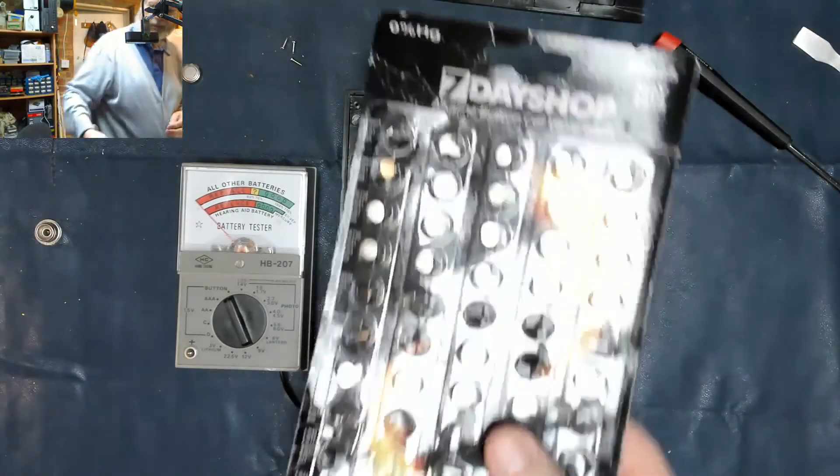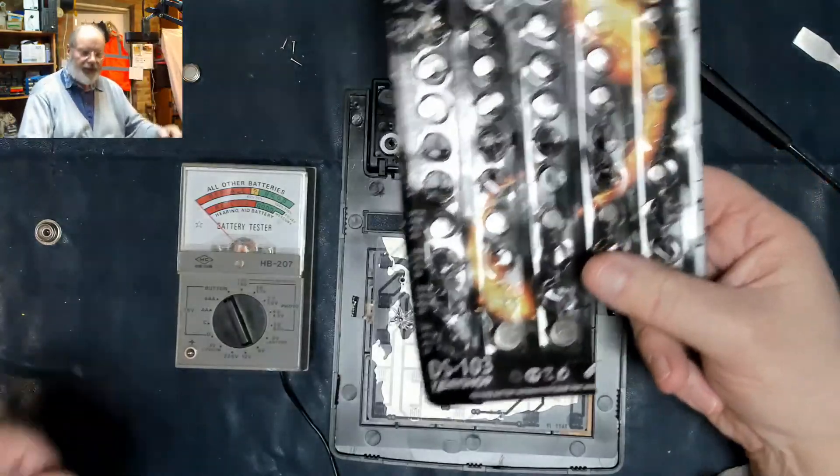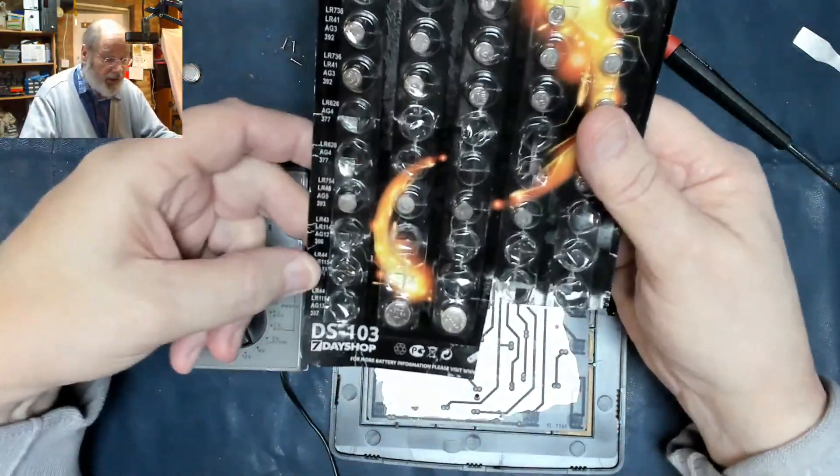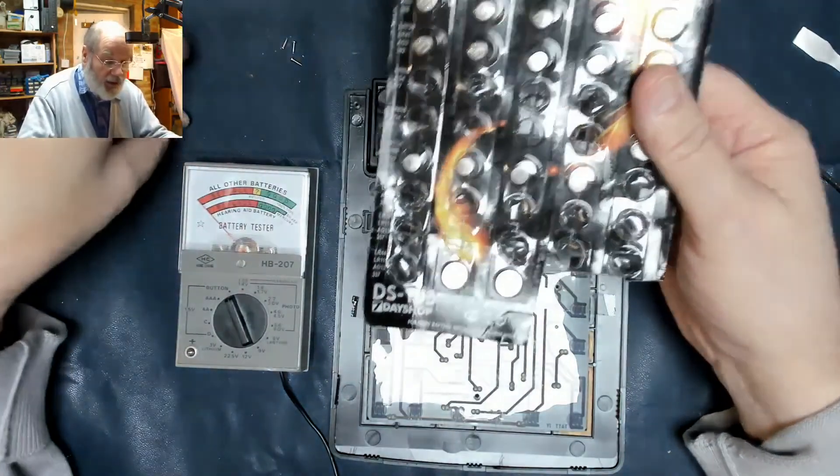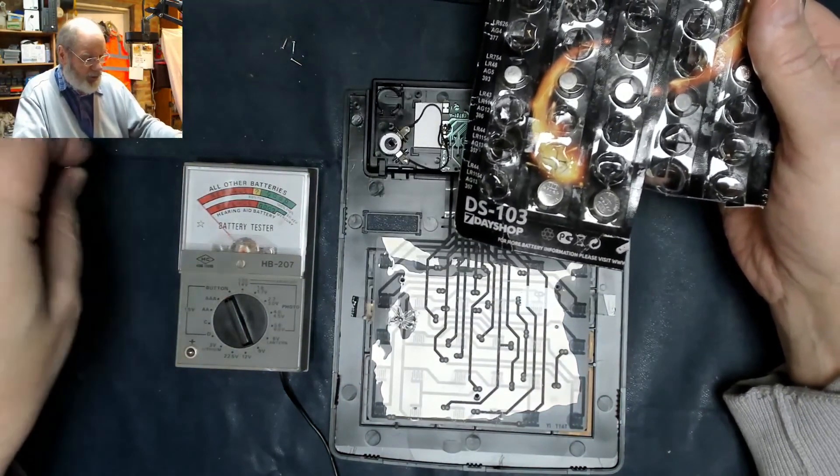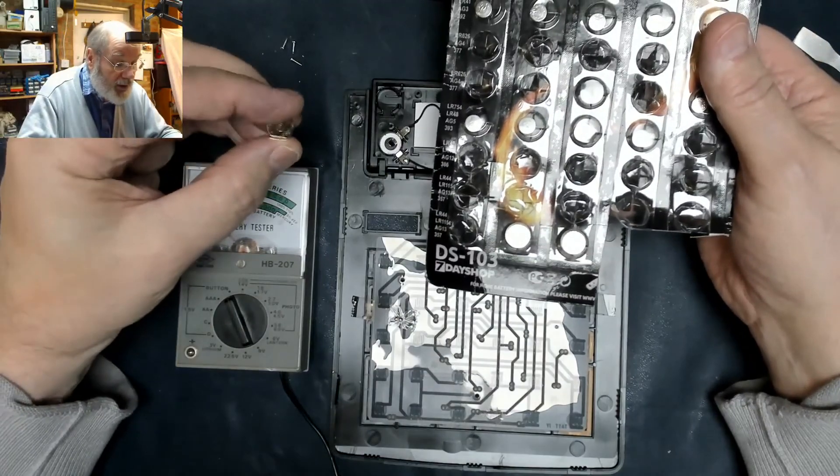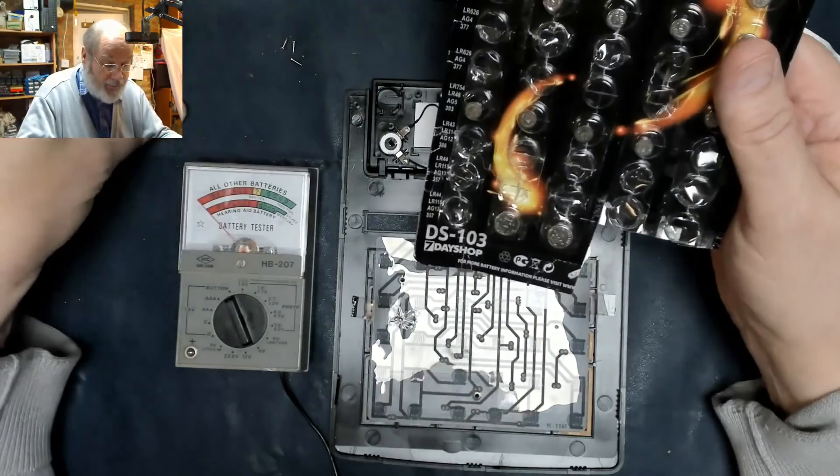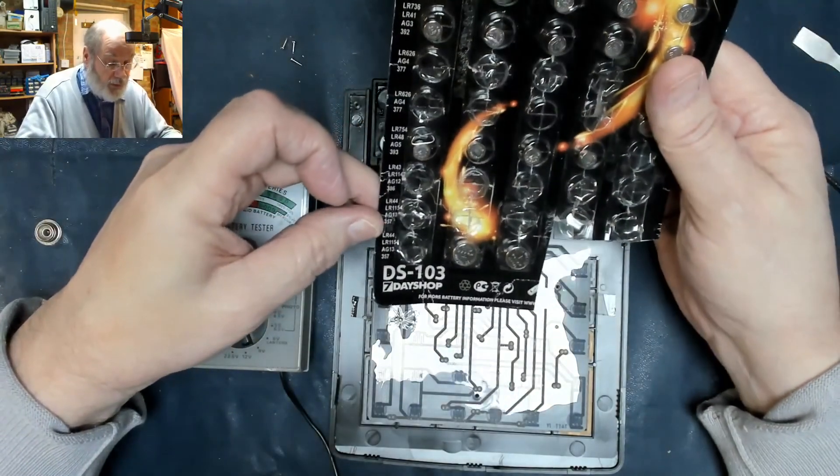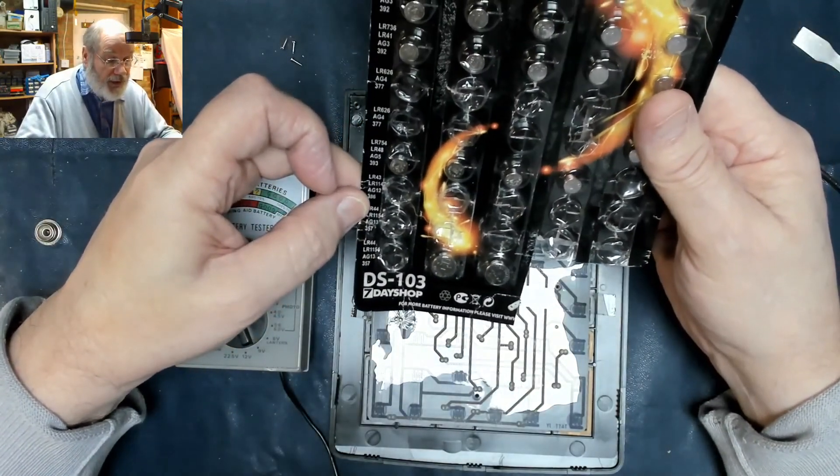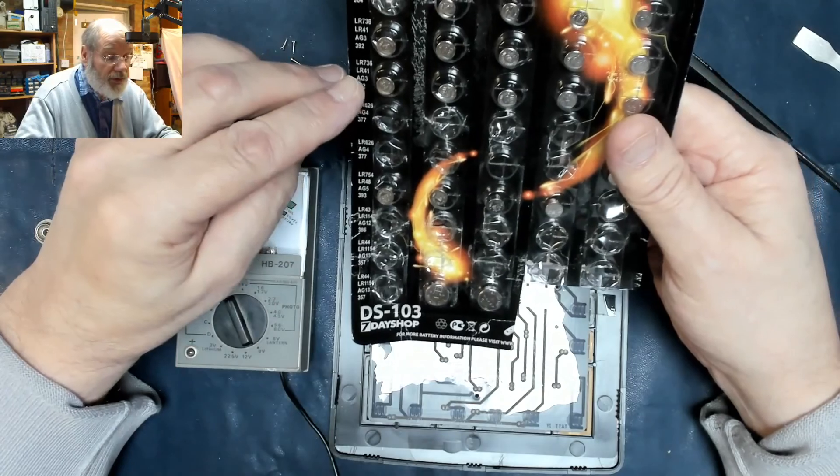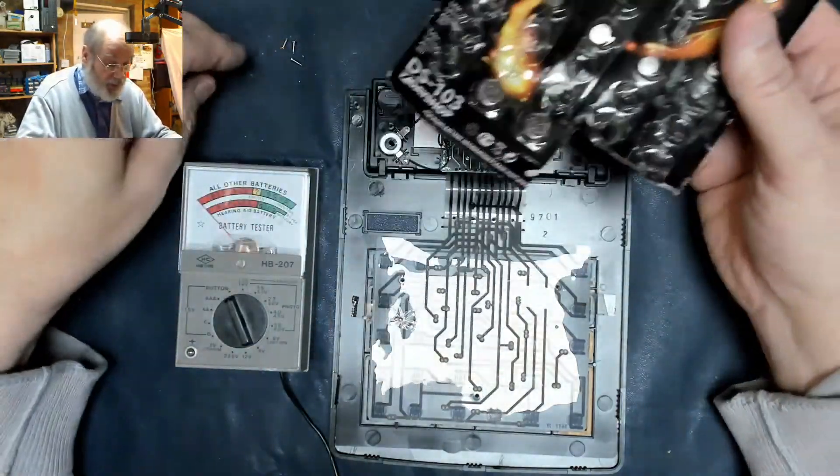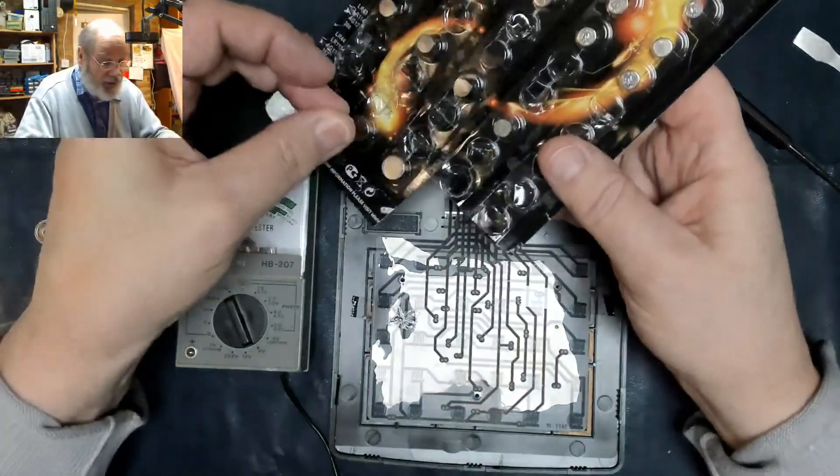Years ago from a company called Seven Day Shop, I bought this pack of batteries. And looking at it, the particular battery that we want is probably the most common, which is why we haven't got any. So it's a 389, a 386, 392, so we haven't got anything like that.